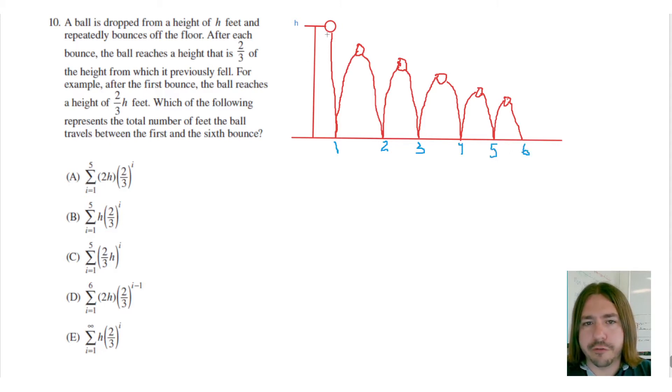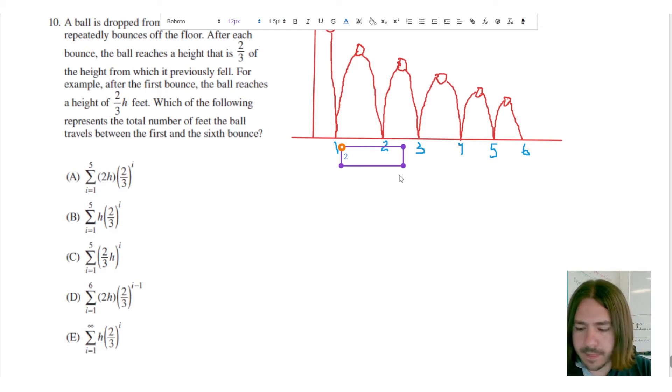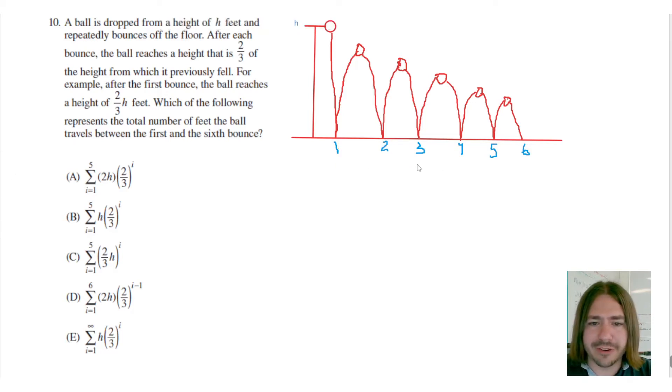So if this first fall was h feet, that means to get from the floor to the next height, we would multiply that height by two-thirds. So this height is going to be two-thirds times the height. Let's make that actually look like a fraction here.